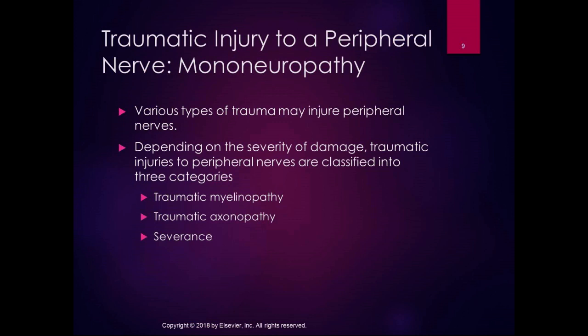Traumatic injury to a peripheral nerve is often the cause of a mononeuropathy. Depending on severity, traumatic injuries are classified into three categories — there's a nice chart on page 331 in the book. The three categories are myelinopathy, axonopathy, and severance.